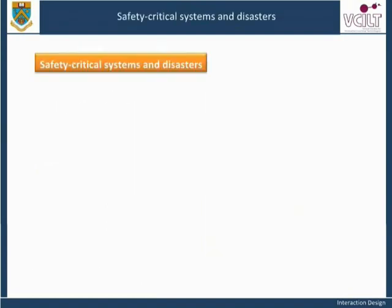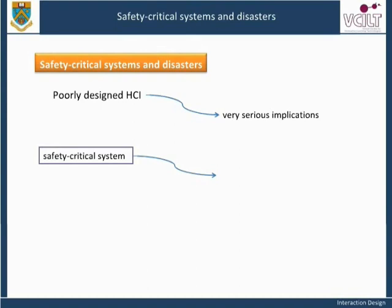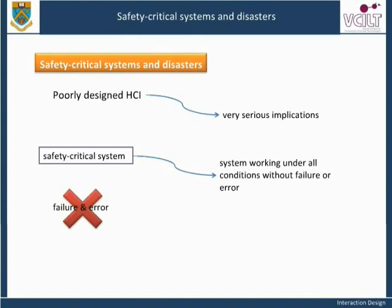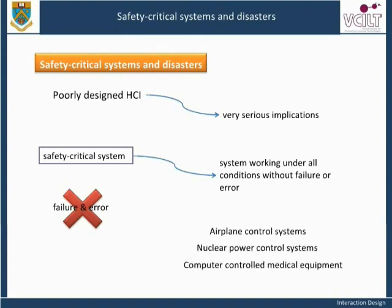Sometimes poor HCI design can lead to very serious implications. There are many systems that are safety critical — a safety-critical system must work under all conditions without failure or error. Some examples are airplane control systems, nuclear power control systems, and computer-controlled medical equipment. Bad interfaces can lead to disasters and even fatalities.